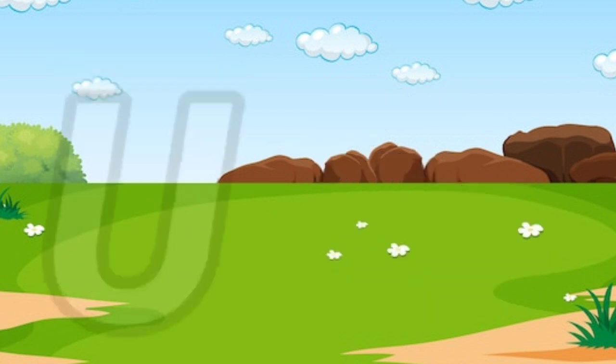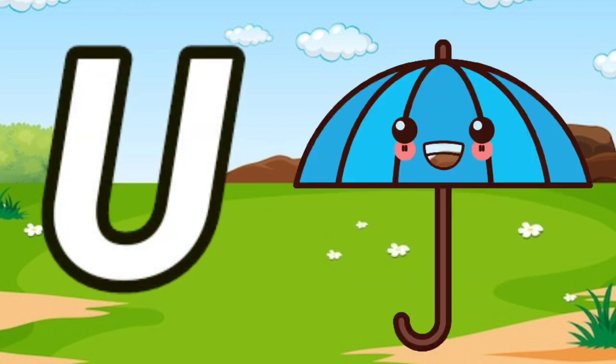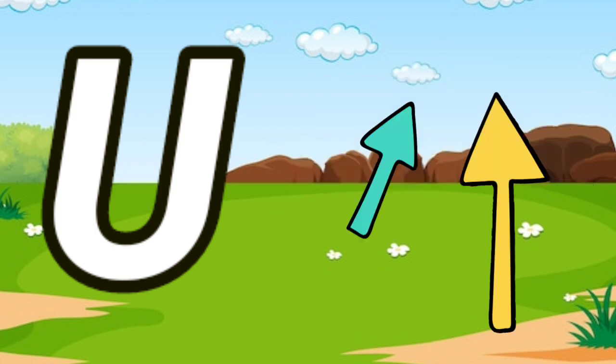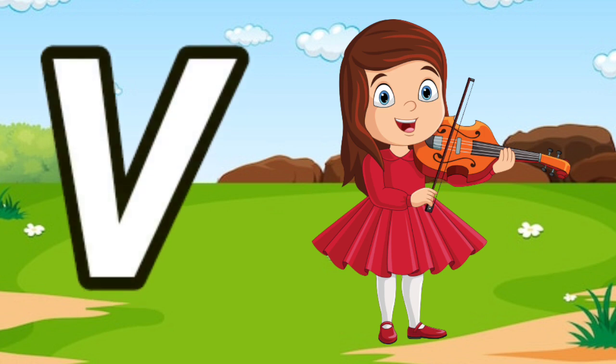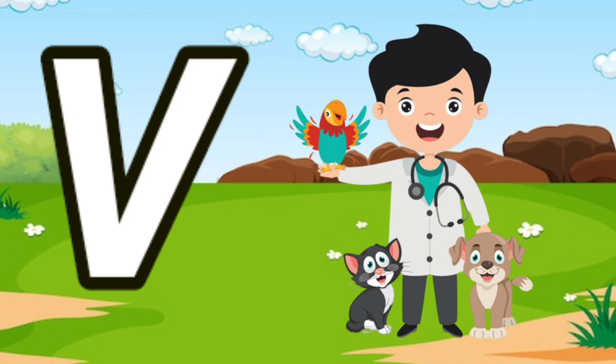U is for Umbrella. U, U. Umbrella. U is for Up. U, U. Up. V is for Violin. V, V. Violin. V is for Vet. V, V. Vet.